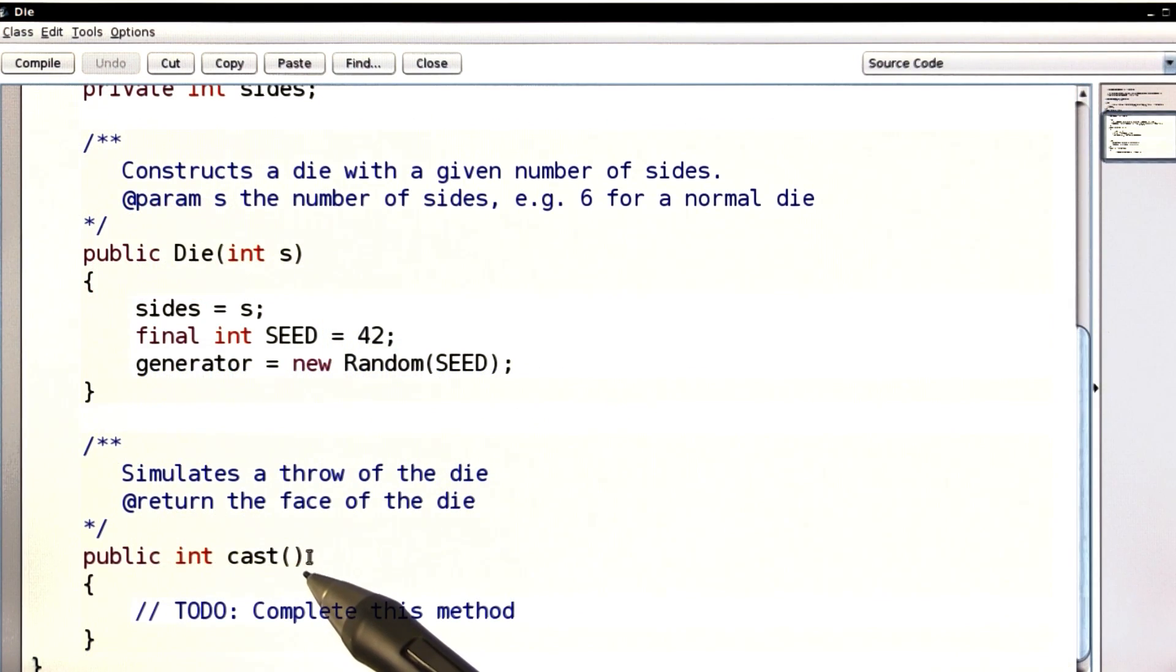And your job is to implement the cast method, so that every time that it's called, it returns a different number between 1 and the number of sides of the die.